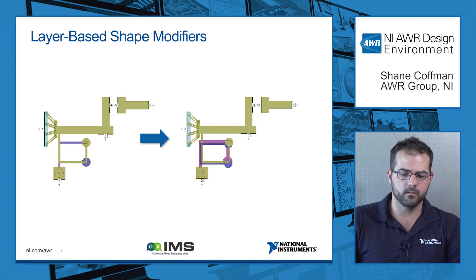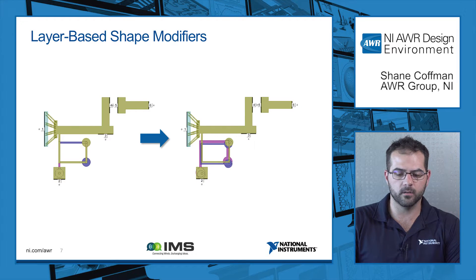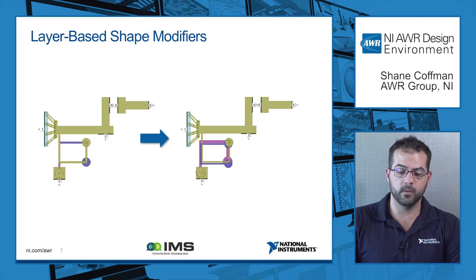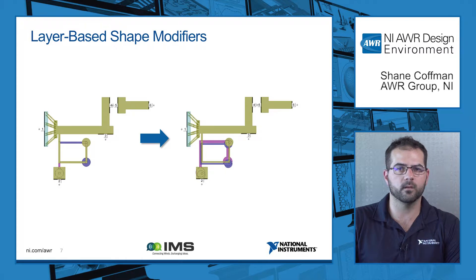To elaborate on layer-based shape modifiers: if you look at the image on the left on the screen, looking at the spiral inductor on the bottom, you can see that the metals are all the same width and are all aligned with each other in the Z-axis — there's no registration error. If you look at the image on the right, you can see that the layers have shifted in X and Y independently of one another. The pink one has gotten thicker and the gold one has gotten thinner. These two things correspond to your registration error as well as your over and under etch. For each layer, you might have one layer modifier and the amount that it moves each layer is just a parameter, and that parameter can have a statistical variation.